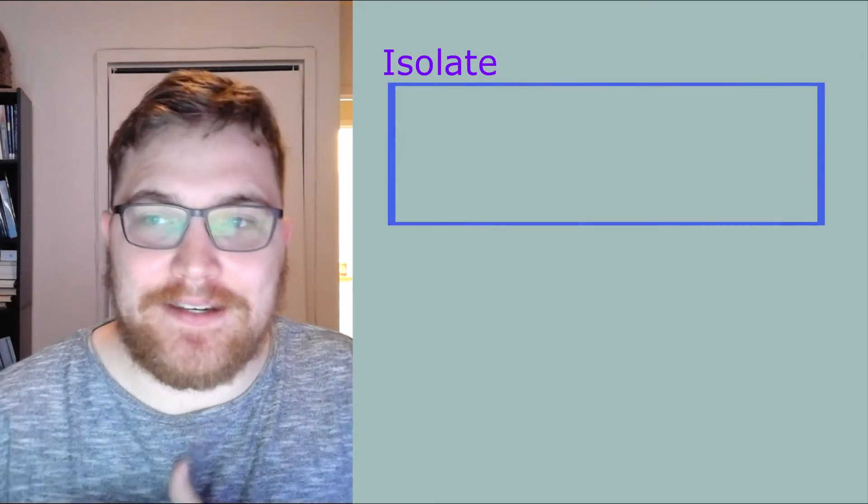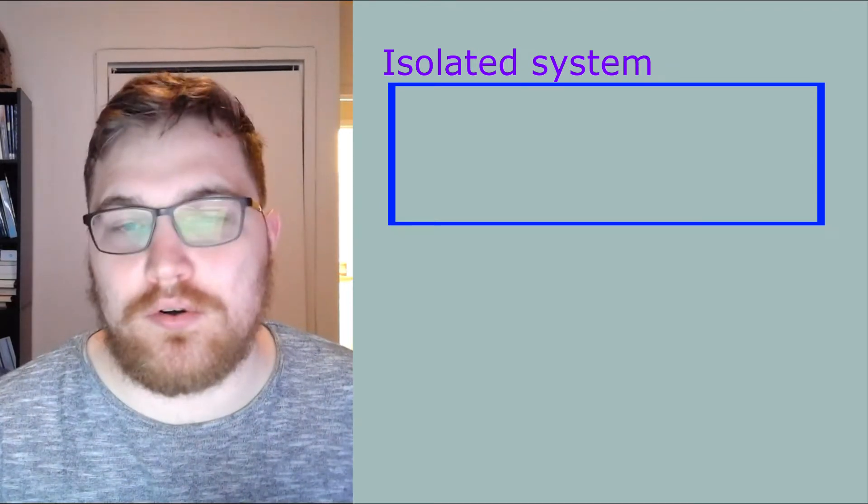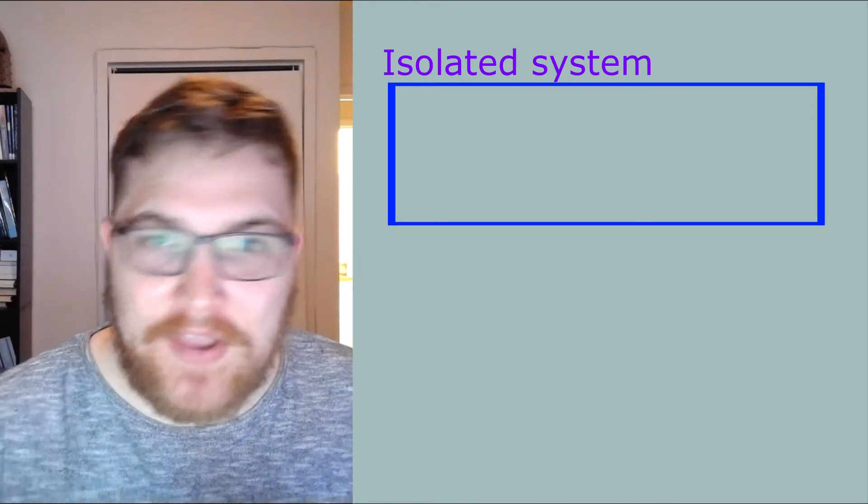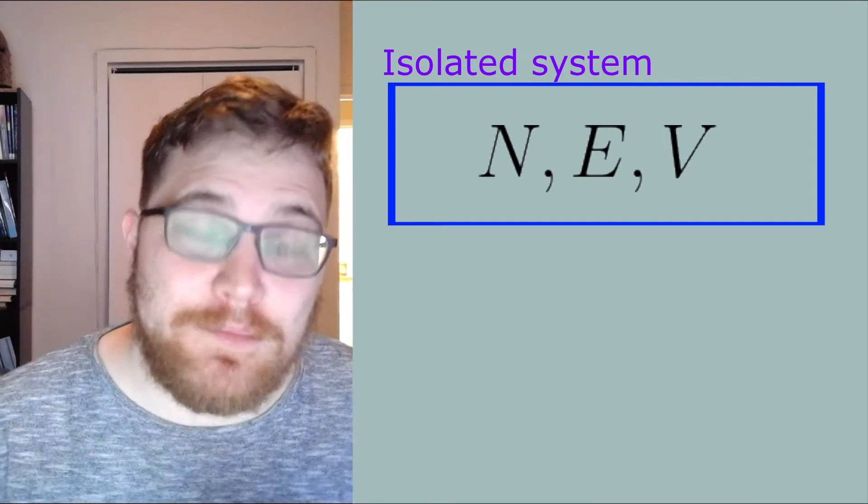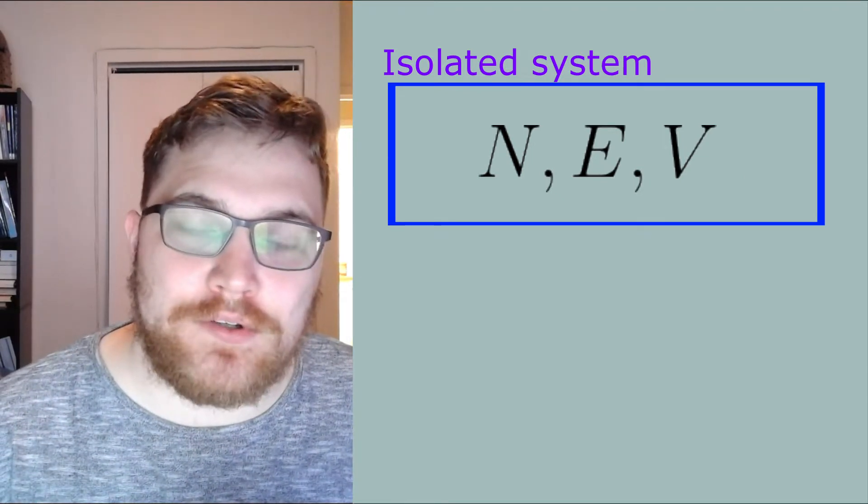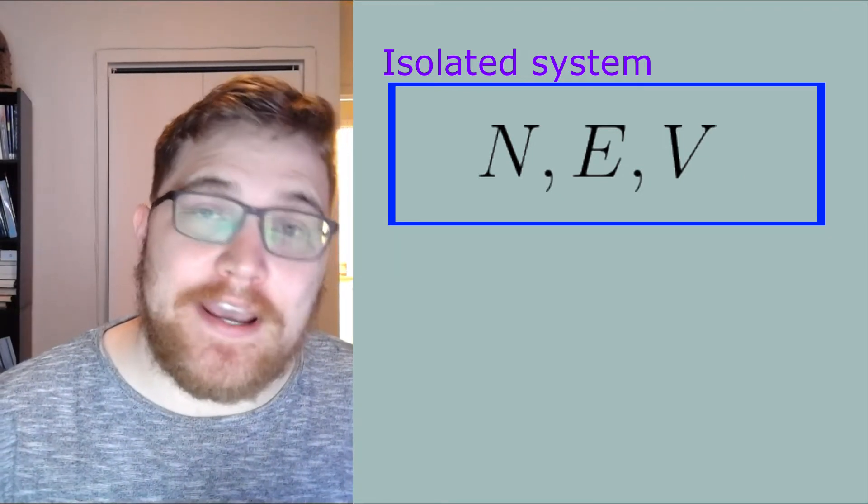Our first physical setting will be a closed and isolated system with some number of particles or lattice sites and a corresponding volume. This makes our thermodynamic variables the number of particles, the energy, and the volume of our system.